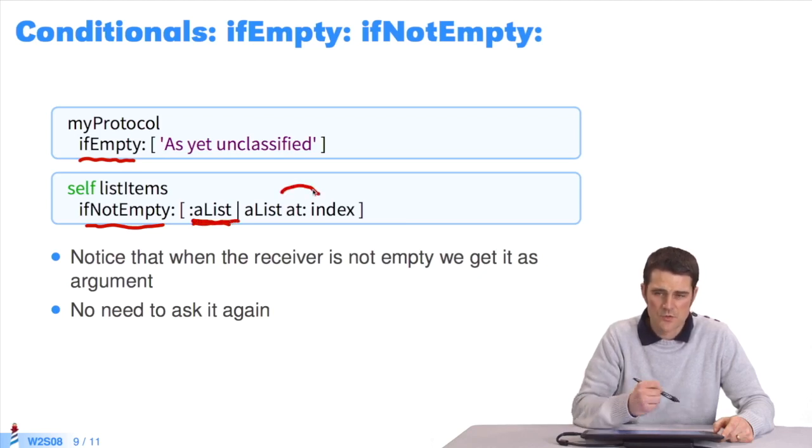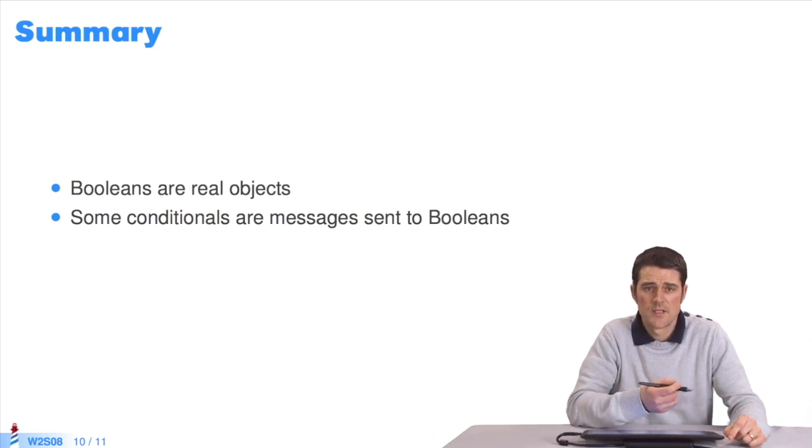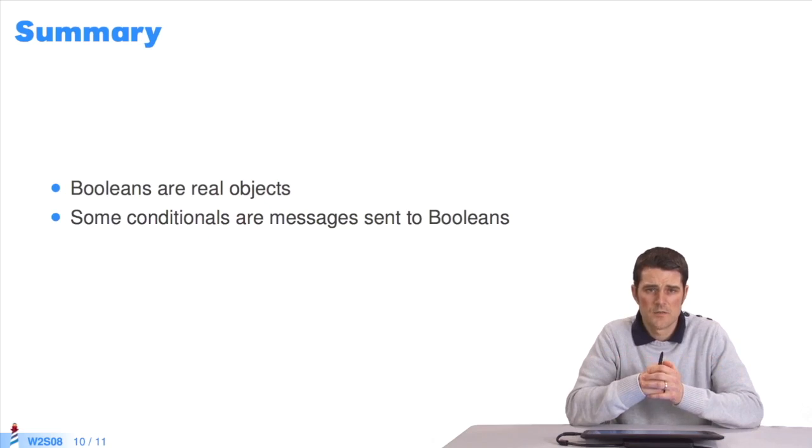In this session, we saw Booleans are normal objects in Pharo and instances of the classes True and False, which inherit from Boolean. You can send them messages. These messages define all the constructions of alternatives or possible conditions in Pharo. In other languages, these would rather be structures in the compiler.